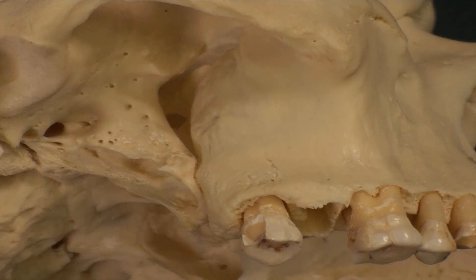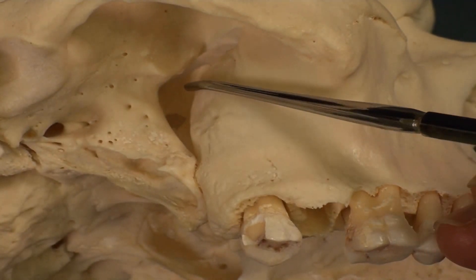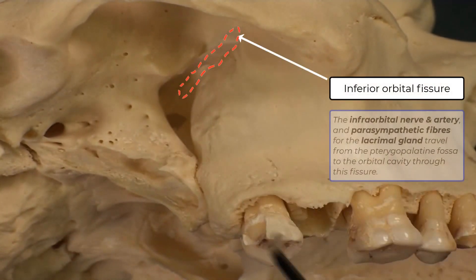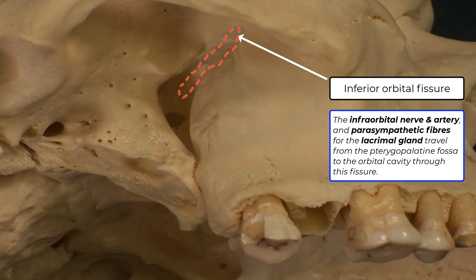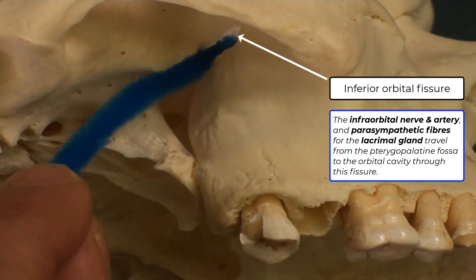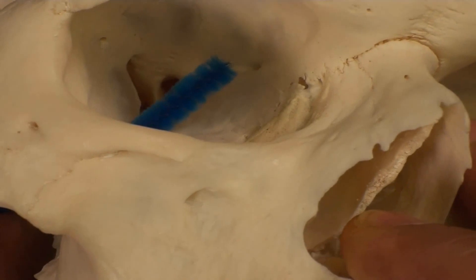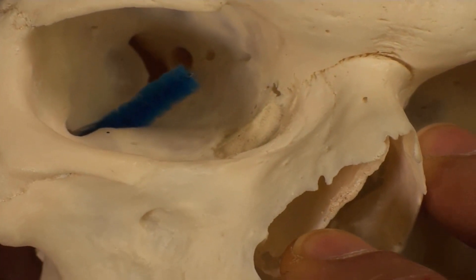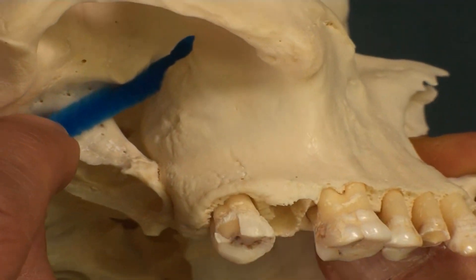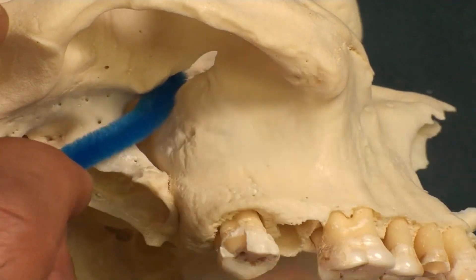Let's go through the boundaries of the pterygopalatine fossa. Anteriorly, we have the maxilla and that opening, which is the inferior orbital fissure, right there. I'm going to pass my pipe cleaner through the inferior orbital fissure. Then I'm going to turn the skull, and as you can see, my pipe cleaner is in the orbit. The inferior orbital fissure connects the pterygopalatine fossa to the orbit.